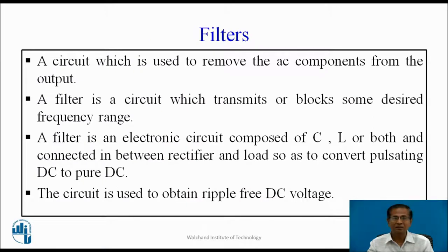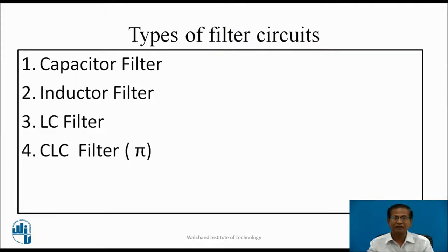A filter is a circuit which is used to remove the AC components from the output. A filter transmits or blocks some desired frequency range. It is an electronic circuit composed of C, L, or both, connected between the rectifier and load so as to convert the pulsating DC to pure DC, obtaining a ripple-free DC voltage. Types of filter circuits: Capacitor filter, Inductor filter, LC filter, and CLC filter — also called a pi filter. These are all passive filters because passive components L and C are used.